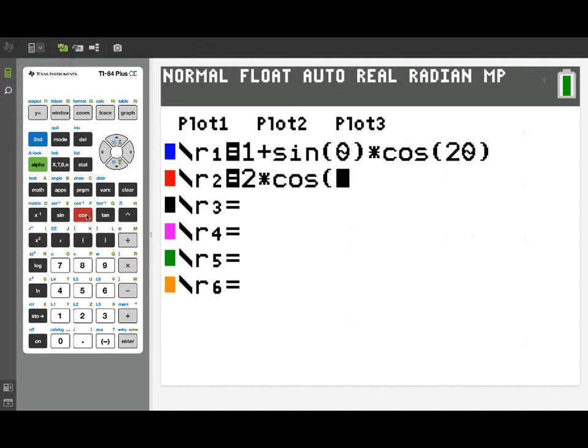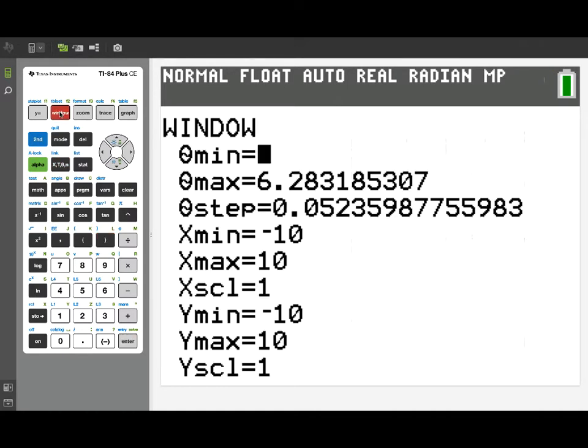Now we're going to take a look at the polar plots of these two curves. First of all, let's set up our window a little bit. So we'll go to the window. Notice that we now have settings for the theta values, our minimum and maximum theta values.